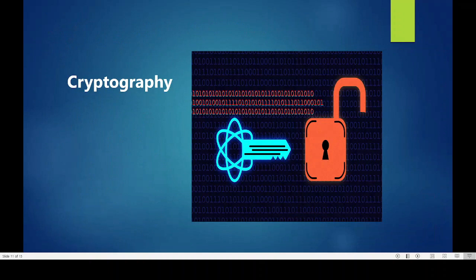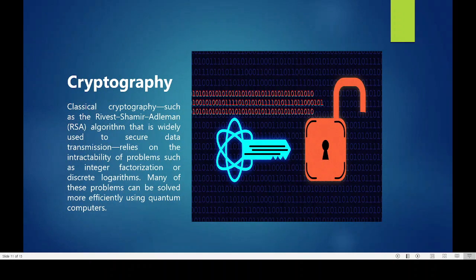Cryptography. Classical cryptography, such as the RSA algorithm that is widely used to secure data transmission, relies on the intractability of problems such as integer factorization or discrete logarithms. Many of these problems can be solved more efficiently using quantum computers.